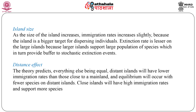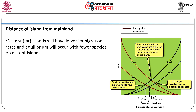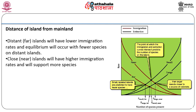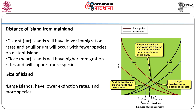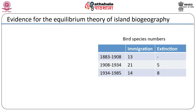Therefore, the number of species on a near large island is higher than the number of species on a distant small island. The theory predicts that, everything else being equal, distant islands will have lower immigration rates than those close to a mainland, and equilibrium will occur with fewer species on distant islands. Close islands will have high immigration rates and support more species. By similar reasoning, large islands with their lower extinction rates will have more species than small ones — though frequently large islands also have a greater variety of habitats and more species for that reason.